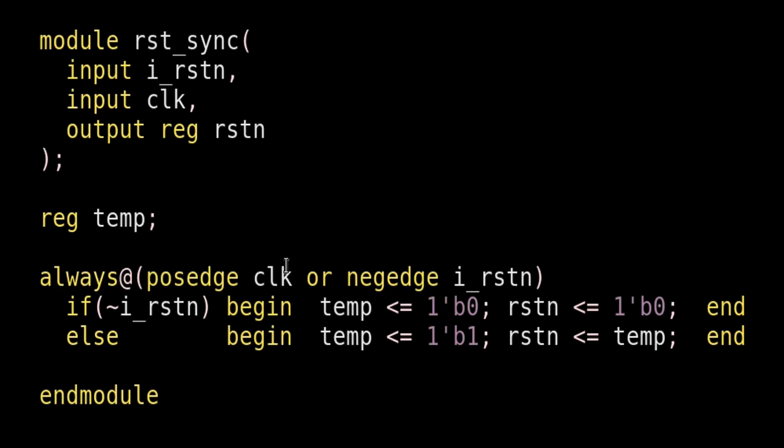Always at the posedge of the clock or negedge of i_rstn because our rstn is active low signal. If not of i_rstn, if reset goes zero, this statement will be true and temp will be equal to zero which is output of first flip-flop. Rstn is output of second flip-flop. It should also go zero. And this will happen asynchronous to the clock. It will not depend upon the clock and my reset synchronizer will give its output as zero irrespective of the clock status.